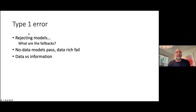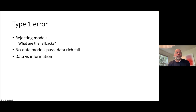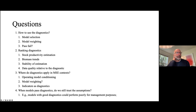Taking notes from the other discussions: the type I error for diagnostics and rejecting models; what are the fallbacks if a model isn't converging — are you doing managers a disservice if there's no fallback? The issue of how no-data models will pass diagnostics while data-rich models often fail. And for data-rich models, how much information can we grade that tells us the things important for management? Felipe and I worked through a set of questions on how to use diagnostics. That's it — thanks.